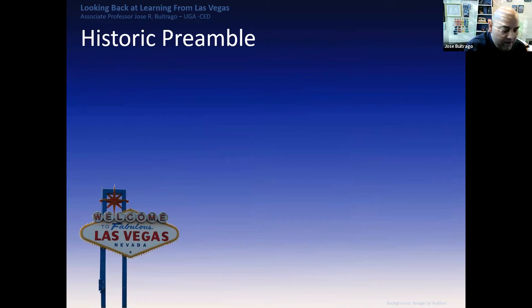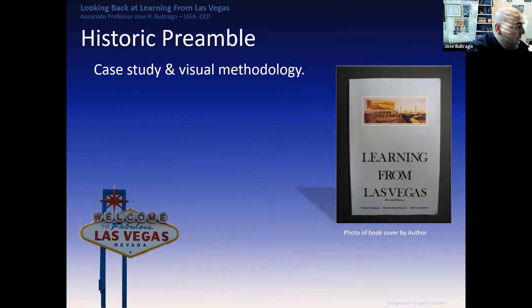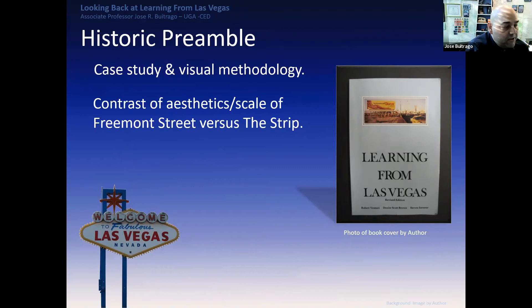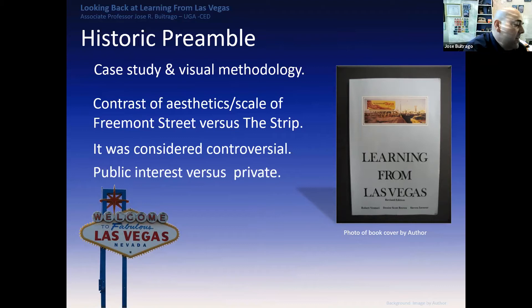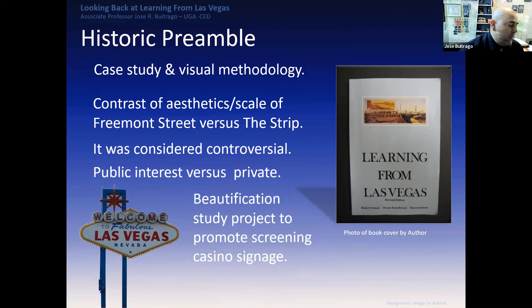That's a picture of my copy — a paperback, unfortunately, as I was not able to afford the hardbound. It's actually a case study and visual methodology, emphasizing contrast of scale: Fremont Street versus the Strip. Those are the two areas the book focused on in 1972. At the time it was considered controversial because there was public interest versus private interest — the public trying to establish dominance over the private sector, which was not happy about it.